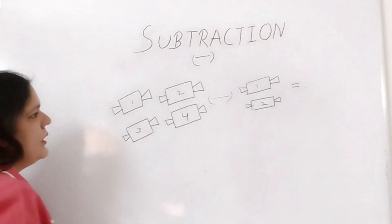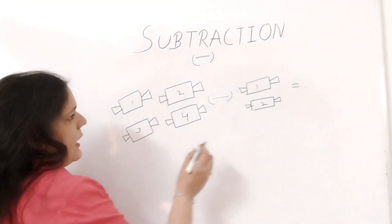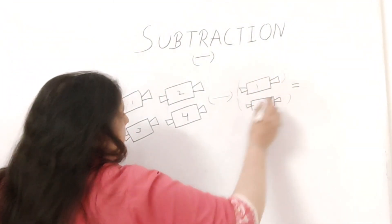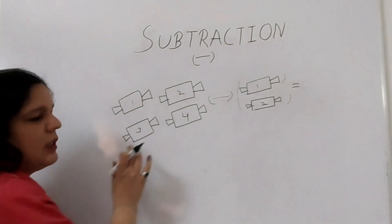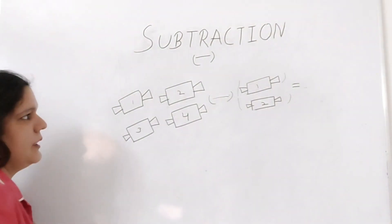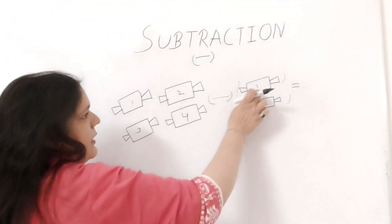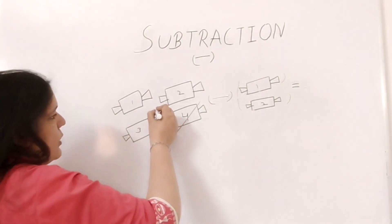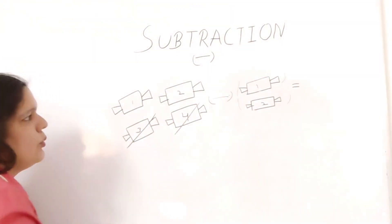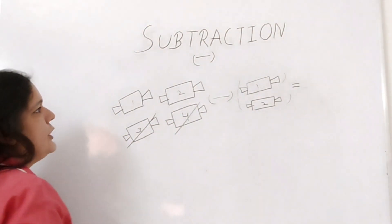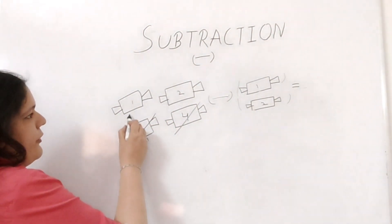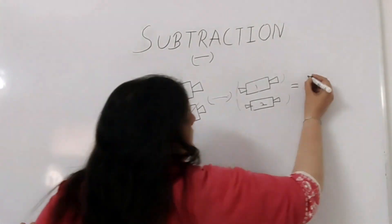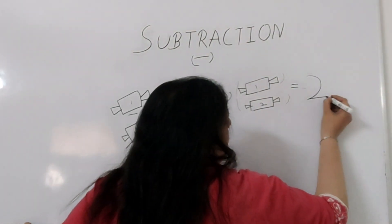So what I will do is I will cut these two shapes from the total number of shapes. These are one and two shapes, so I will cut one and two. How many shapes do I have left? One and two. The answer will be two.